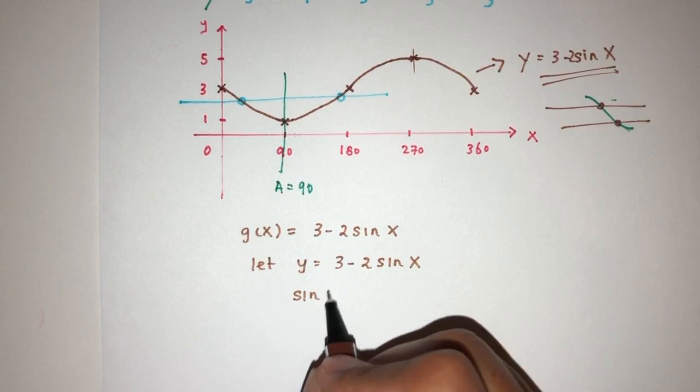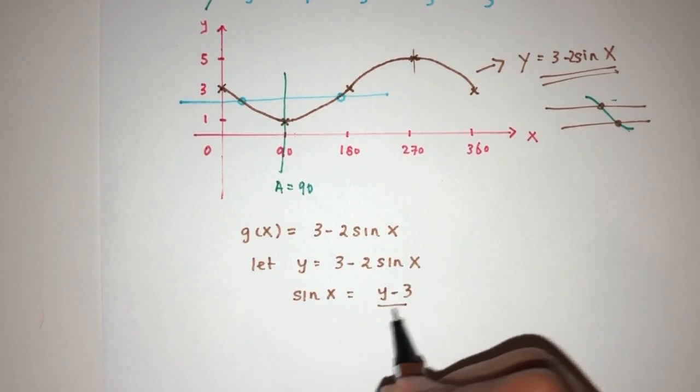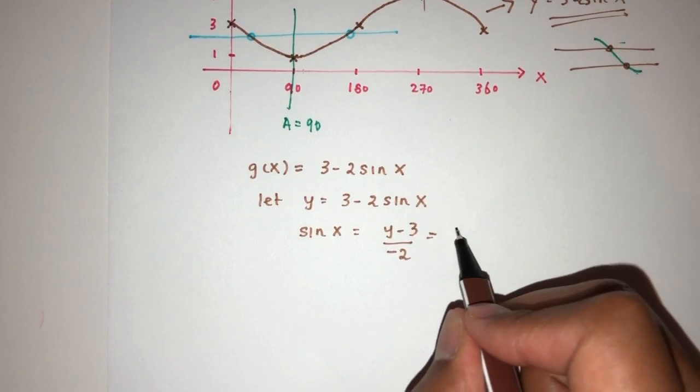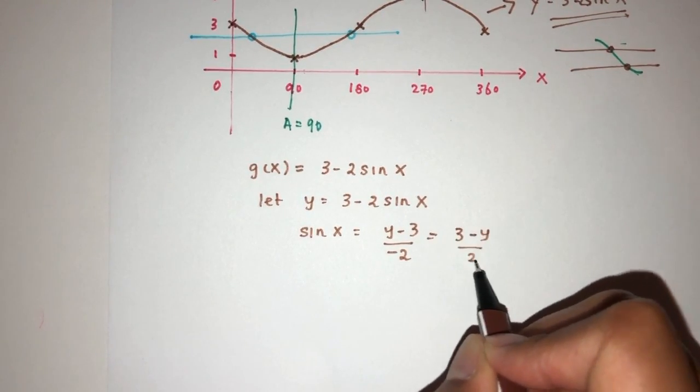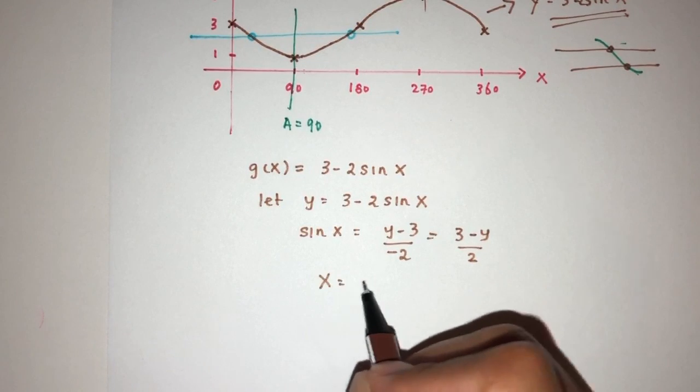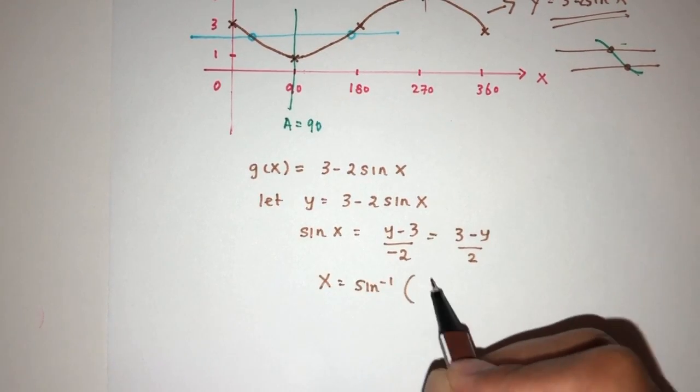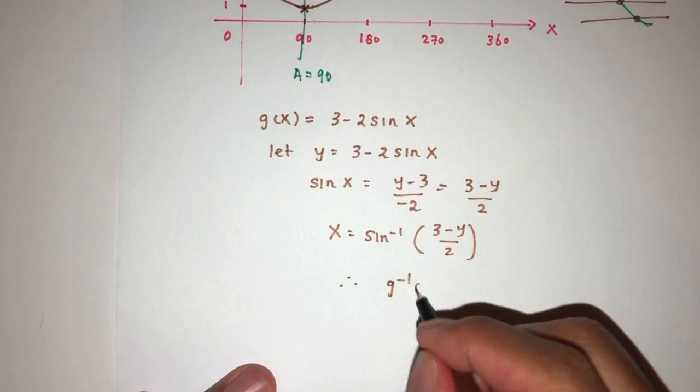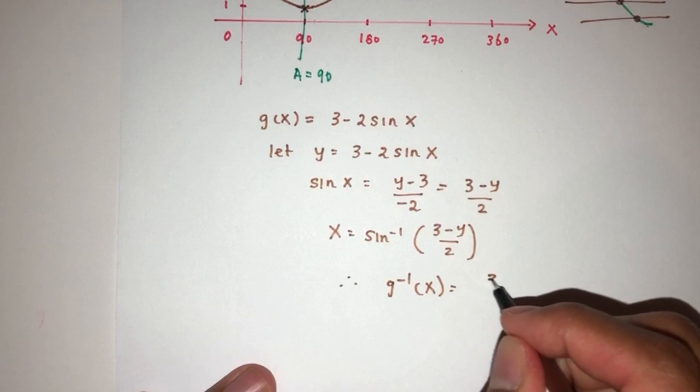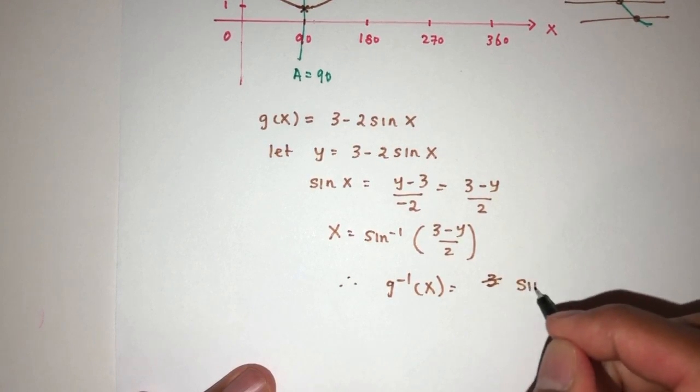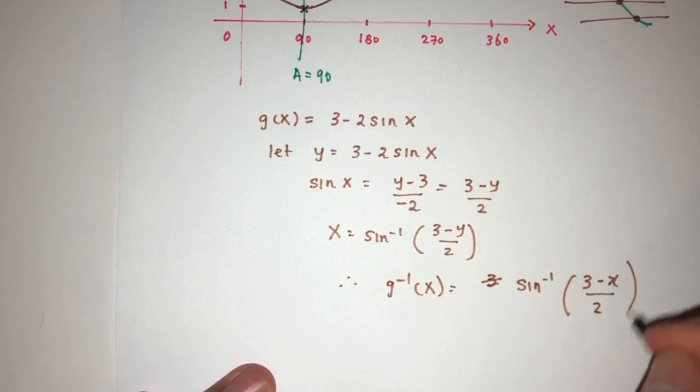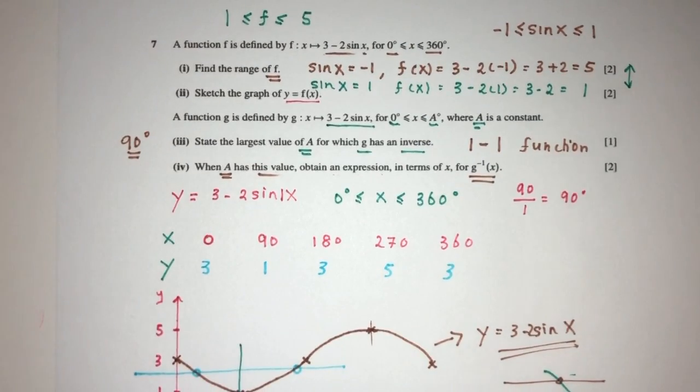Now sin x will be what? y minus 3 divided by minus 2, right? We can write 3 minus y over 2. Same thing. Now x will be sin inverse of 3 minus y over 2. Now finally, we can write that in terms of x, so g inverse of x, that will be sin inverse of 3 minus x over 2. So that will be part four of your question to find an inverse for g of x.